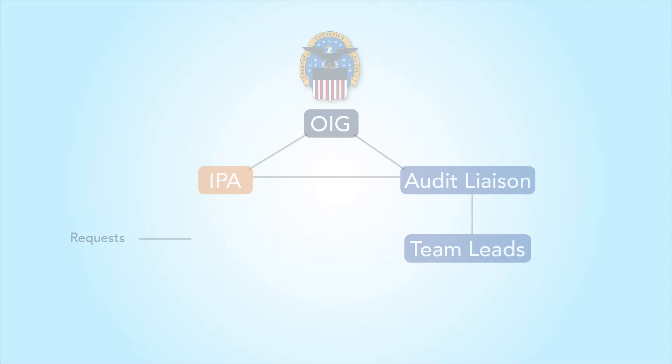The audit response team's responsibilities are to interface between the auditor's requests and the government personnel. They're considered the liaison. So when an auditor makes a request, the audit response team will be the first one to see it, and then they will send that request to the appropriate process owner for them to answer the information.